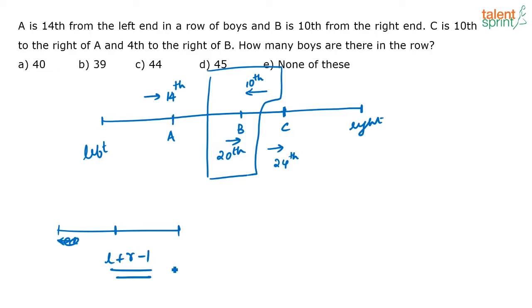Applying this formula: 20 plus 10 minus 1 equals 29. We know B's position from the left end is 20 and from the right end is 10, so there will be 29 people. Now checking the options — none of the options match, so the answer here will be none of these.